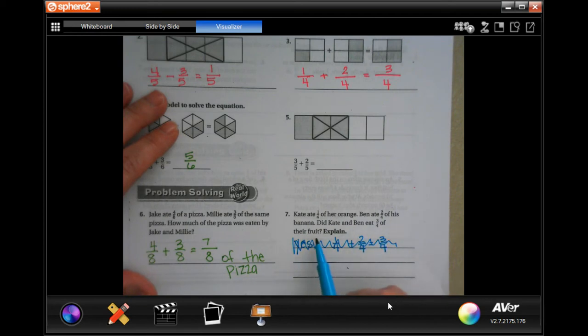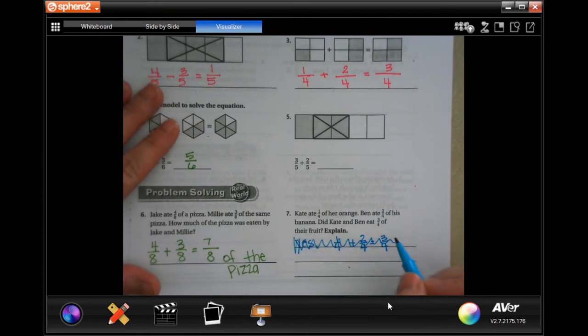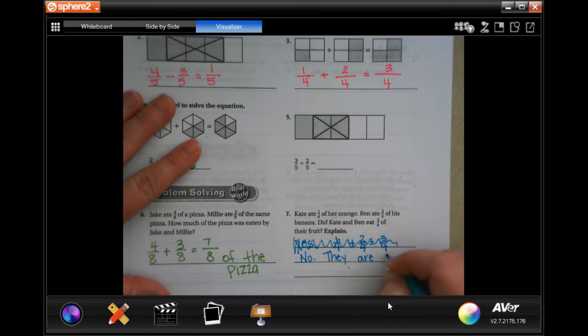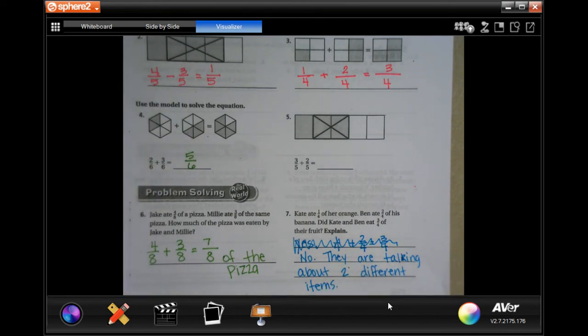Did Kate and Ben eat three quarters of their fruit? So they're talking about two different fruits. So I'm sorry guys, that was my bad. No, they're talking about two different items, two different fruits, two different whatever.